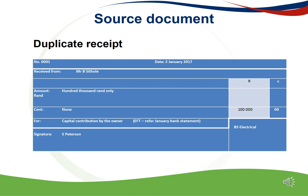After receiving the capital contribution, Mrs. Peterson, the bookkeeper of BS Electrical, will issue a receipt as proof that the money was received. She will give the original document to Mr. Satole and keep the duplicate receipt as proof for the recording of the transaction in the accounting records of the business.